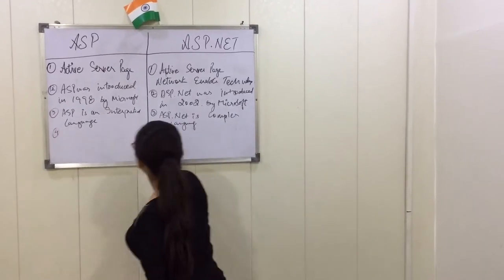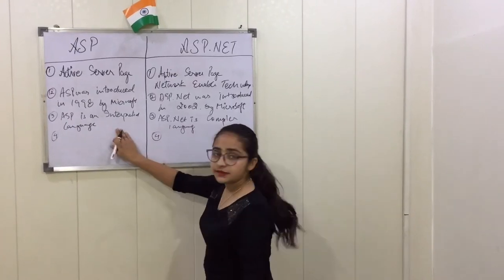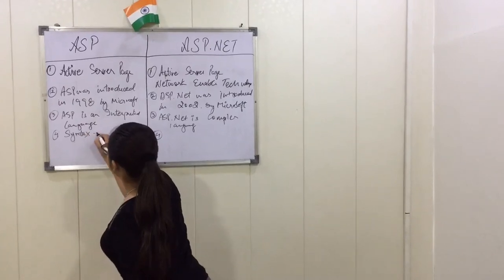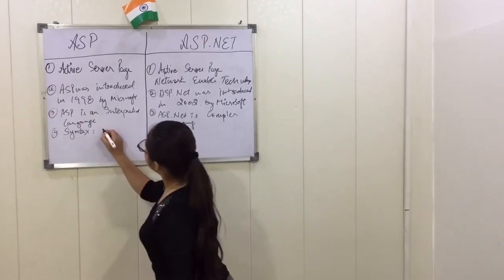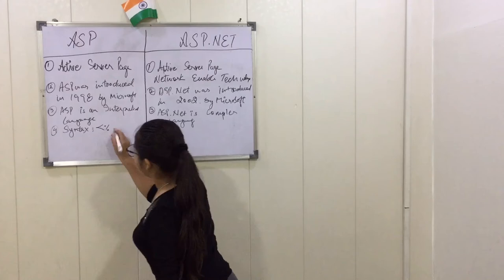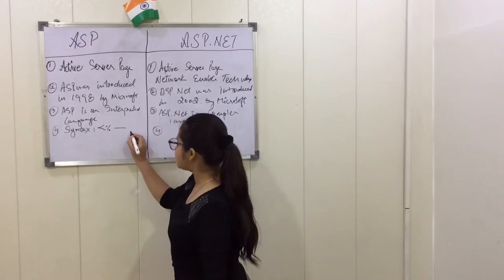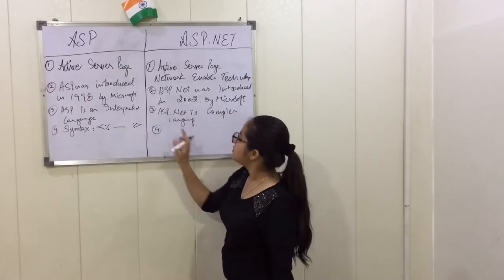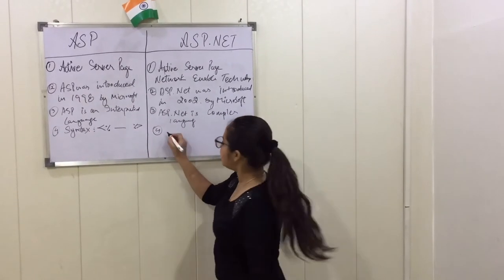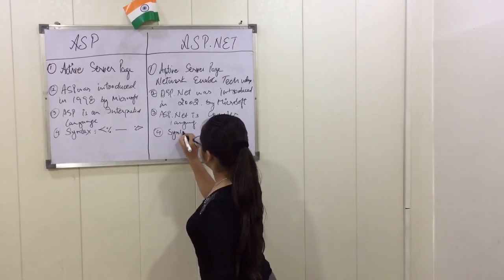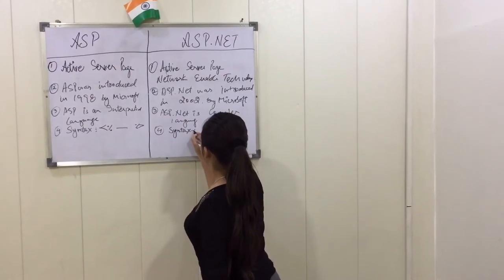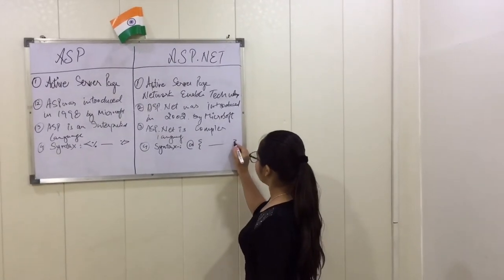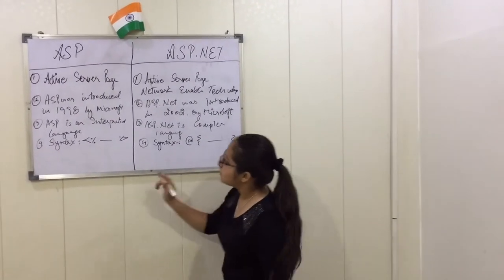The next difference is the syntax. The ASP syntax uses a tag starting with a percentage sign, then the statement in between, then closed with a percentage sign. Whereas ASP.NET syntax uses a tag start followed by code inside curly braces.